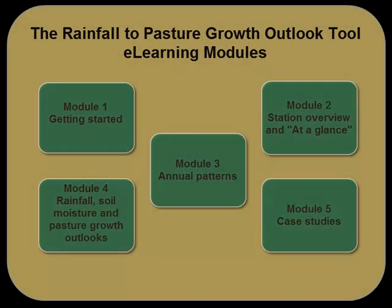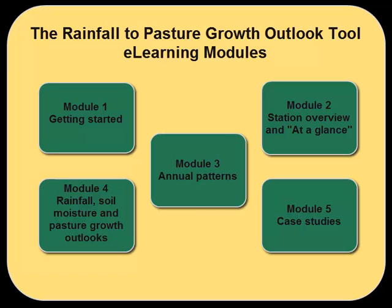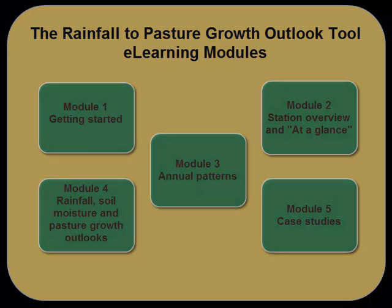This concludes the Getting Started module. For more information regarding specific resources available through the Rainfall to Pasture Growth Outlook tool, refer to the other modules in the e-learning series or visit rainfall.mla.com.au/help.